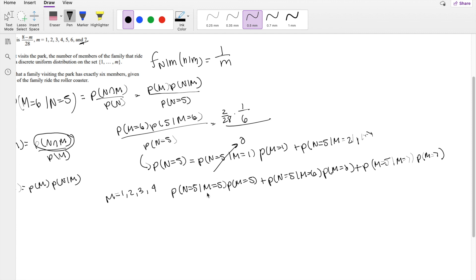Plus the probability that n equals 5 given m is equal to 6 times the probability that m is equal to 6, plus finally because m is the final number 7, we can stop here after this, m is equal to 7 times the probability that m is equal to 7.